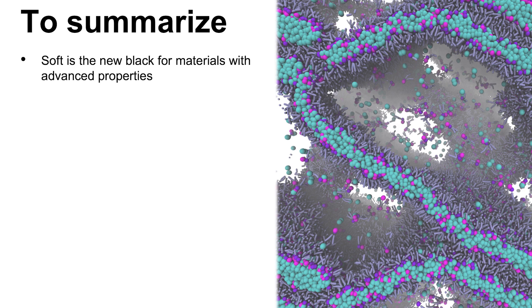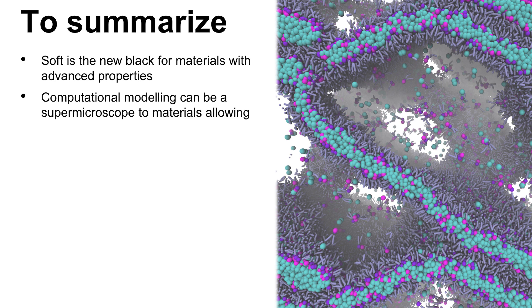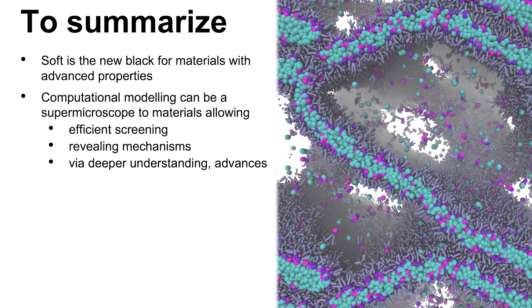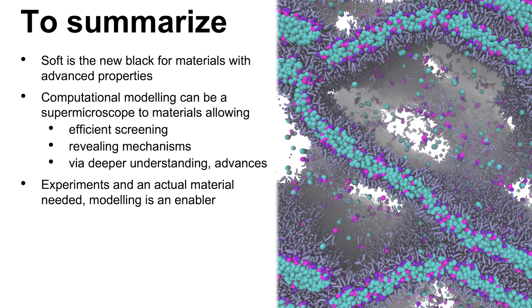To summarize, I hopefully gave you a couple of examples of why soft materials really have the promise for advanced future material solutions — soft materials are super cool and worth putting time into. Computational modeling can be a supermicroscopic tool, allowing very efficient screening. It reveals mechanisms and understanding by showing what's really ongoing in the material. And there should always be experiments and an actual material side by side with the modeling — modeling is an enabler for advances in materials.